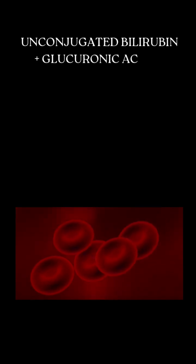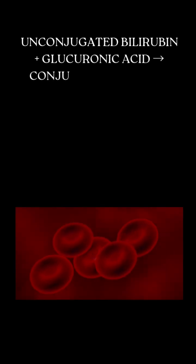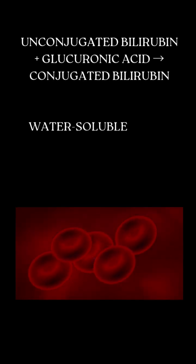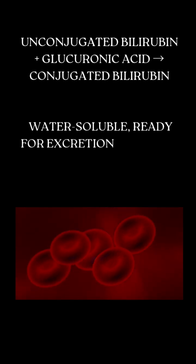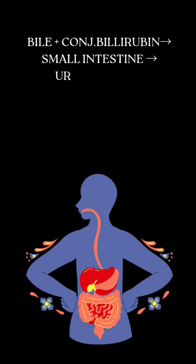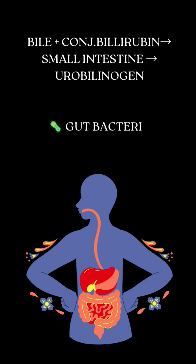In the liver, bilirubin is conjugated, making it water-soluble for excretion. With bile, conjugated bilirubin enters the intestine and is transformed by bacteria into urobilinogen.